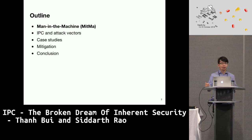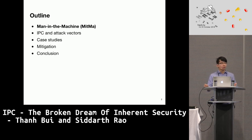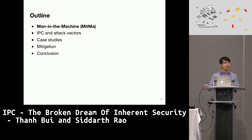The structure of the talk is as follows. I will first discuss the threat model that we call Man-in-the-Machine, or MITMA, and then I will cover some basics about IPC and its attack vectors, which make many software vulnerable to the MITMA threat model. I will then go through some case studies of real-world software applications vulnerable to MITMA, and finally I will sum up with some mitigation mechanisms.